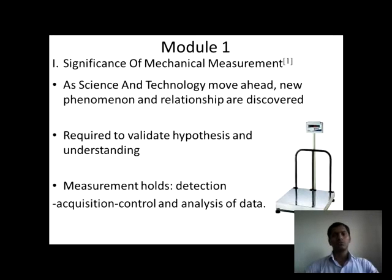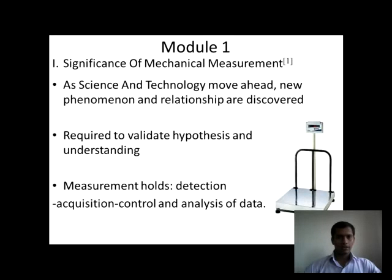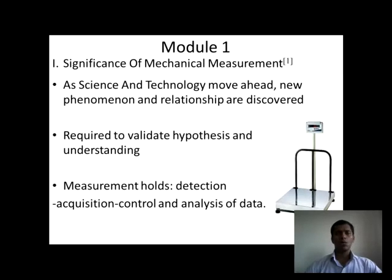As science and technology move ahead, new phenomena and relationships are developed. For example, we are considering a load cell. When we are standing on that load cell platform, it will give you the exact weight as desired. That desired weight is the relationship between weight and the strength of the load cell. That requires hypothesis and understanding. Hypothesis means we consider something — for example, that the world is going to end on a certain day. If this happens, the hypothesis is right; if it does not, the hypothesis is wrong.